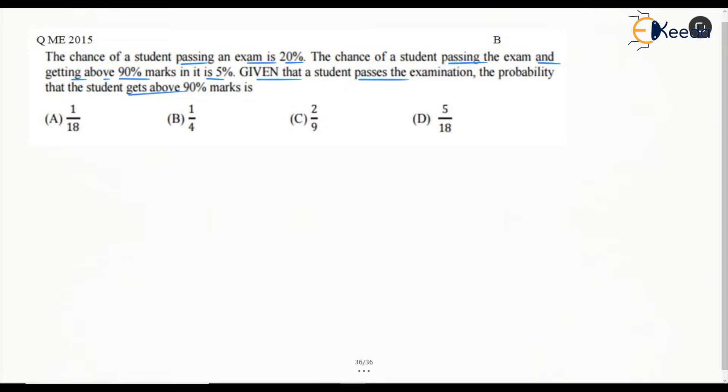Basically they are talking about two events and they are also talking about the joint probability and conditional probability here. Let's say the student passing an exam is 20%, so let's say this event is A, which is passing the exam.